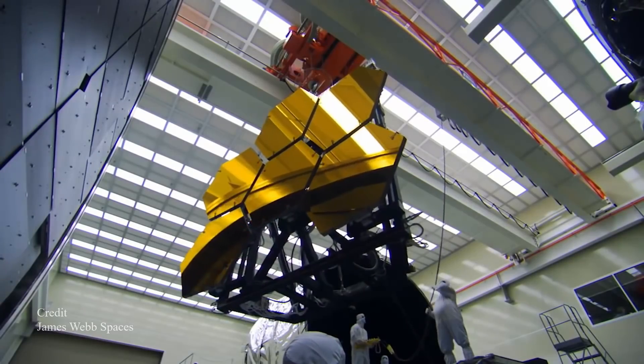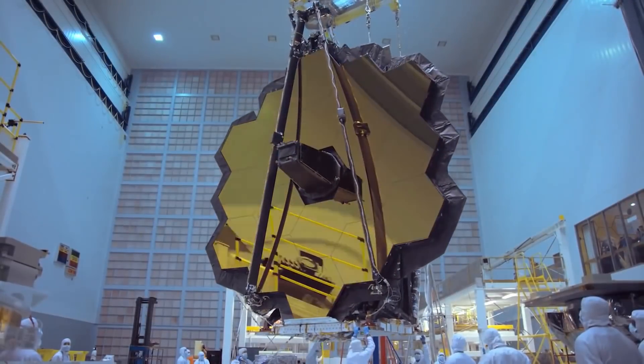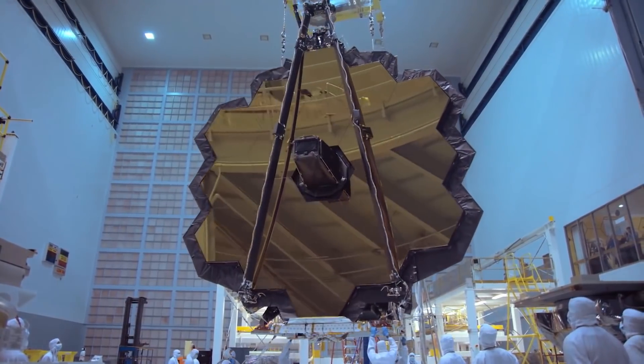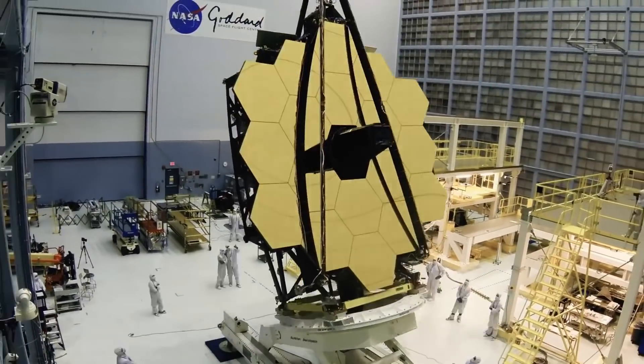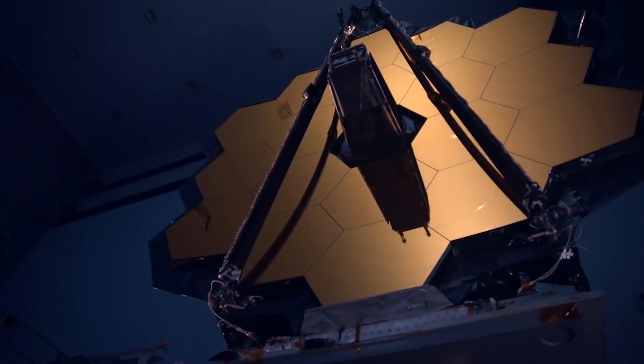The telescope mirror is an enormous multi-segmented panel that is composed of 18 hexagonal segments. Seeing as the telescope's mirror is too large to directly fit into the payload fairing of any operational rocket existent at the moment...